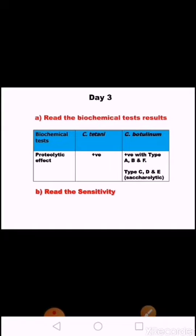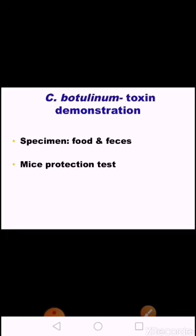Clostridium botulinum has various immunologic types. Types A, B, and F give a proteolytic effect, whereas types C, D, and E give a sacrolytic effect. For Clostridium botulinum, the organism is usually not cultured. Botulinum toxin is demonstrable in uneaten food and the patient's serum by mouse protection test — mice are inoculated with a sample of clinical specimen and will die unless protected by antitoxin.